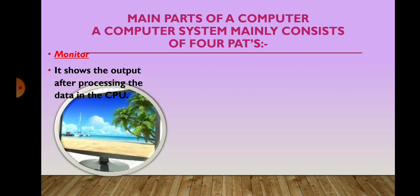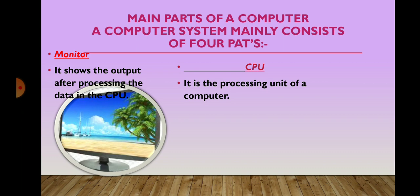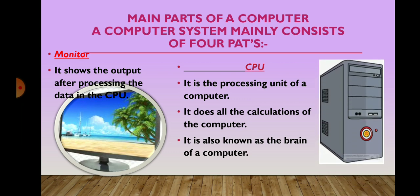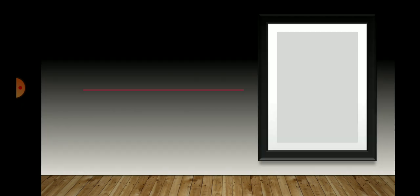Next is CPU. CPU stands for Central Processing Unit. It is the processing unit of a computer. It does all the calculations of the computer. It is also known as the brain of a computer. The CPU has three parts in it.